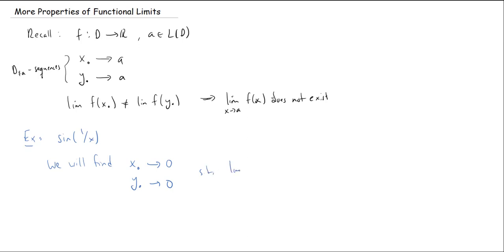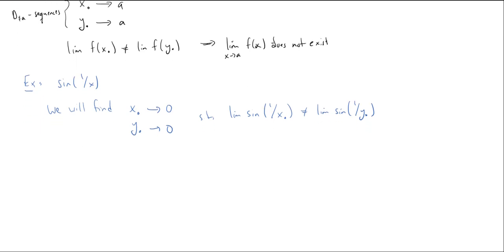such that the limit of sine of, well, in this case, one over X dot, is not going to be the same thing as the limit of sine of one over Y dot. And this will imply that the limit as X approaches zero of sine of one over X does not exist. So let's see how we do this.